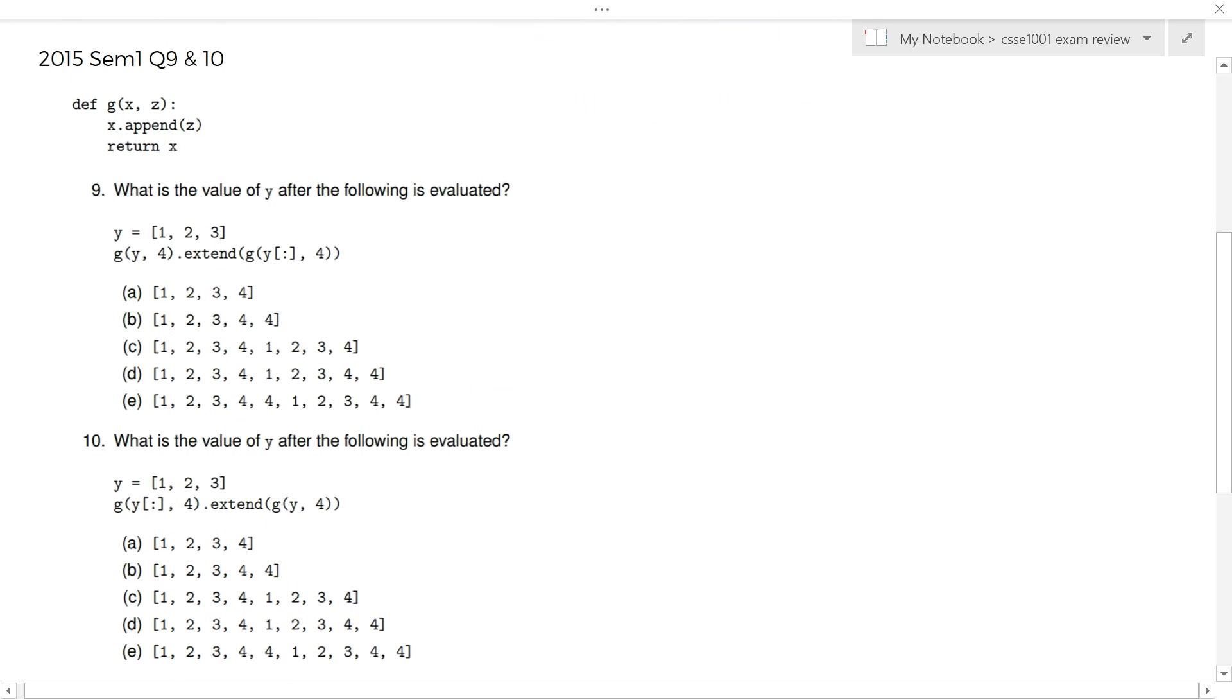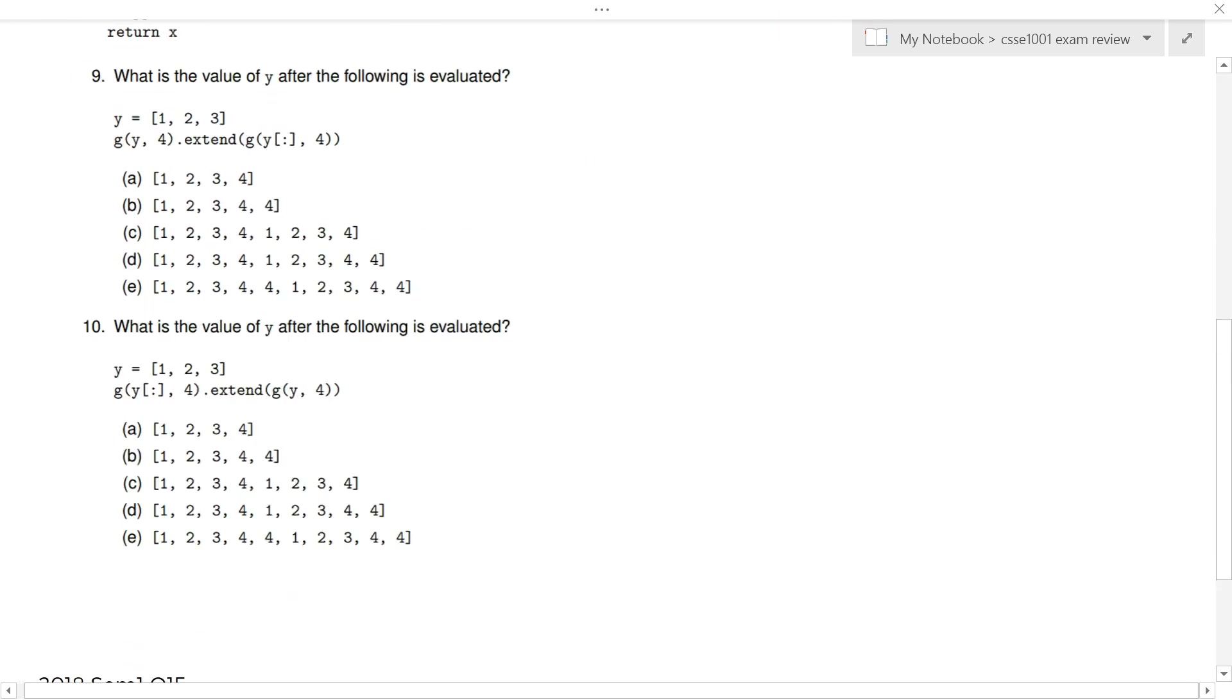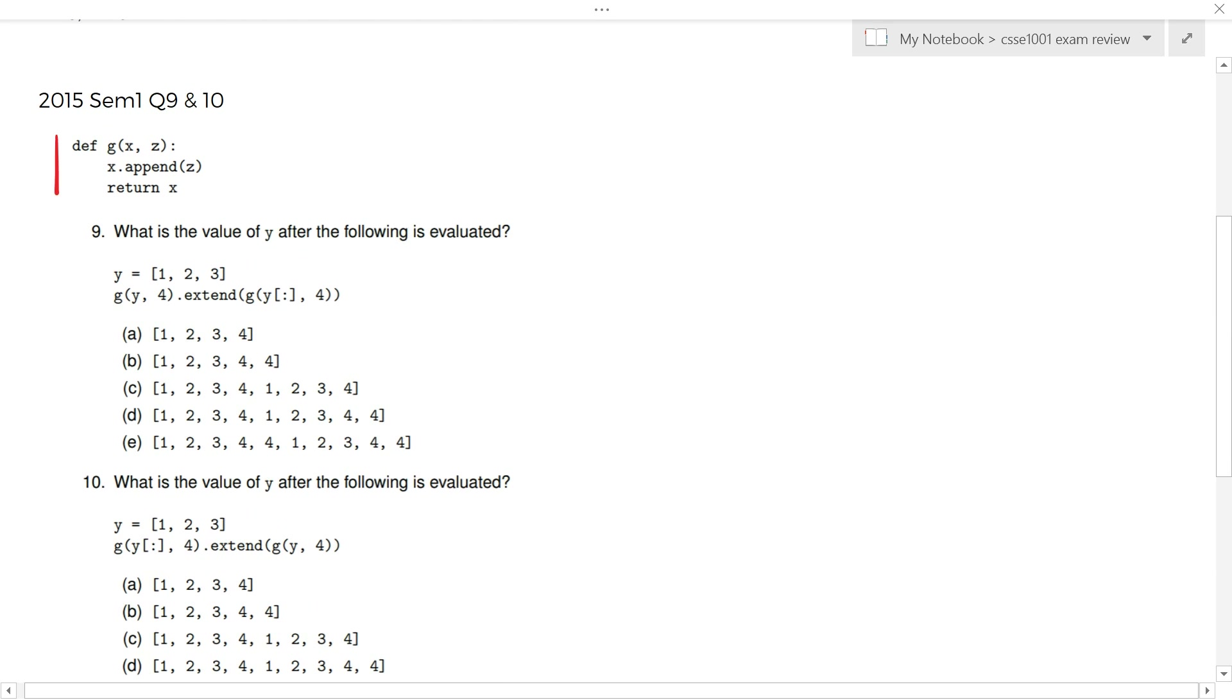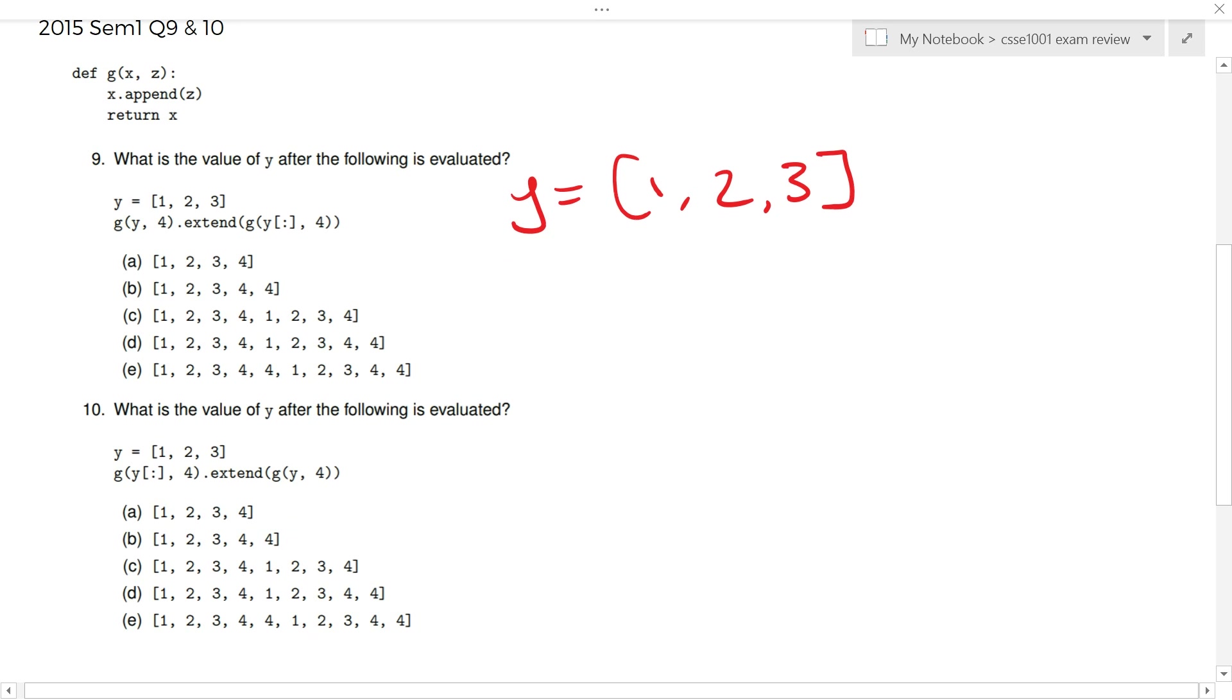So, 2015, semester one, question nine. We get given this function. Copy into idle. See how it goes. But it's basically just overcomplicated dot append method. You get a list x, and you get some number z, and you just go x dot append z. Question nine. Let's do it together. Y equals one, two, three. Again, you have paper in the exam. Use it. One, two, three. In the second line, when reading in Python, left to right, in to out. So, g, y. So, you're not making a new one. You're just using the same y. And then you just add a four to it. Add a four.